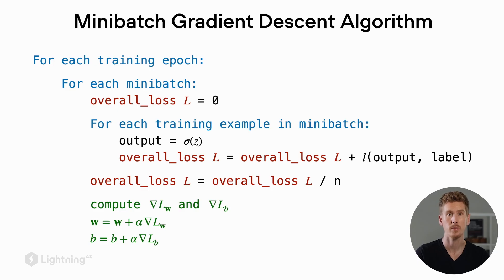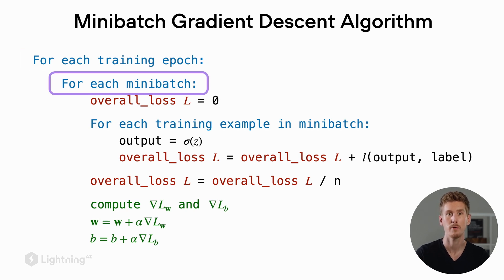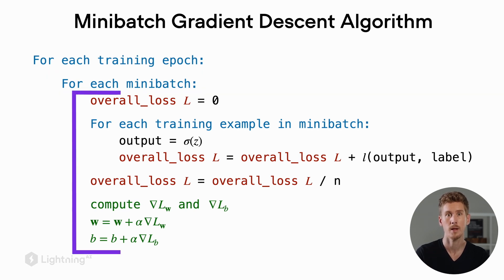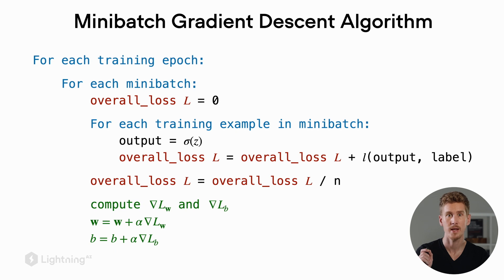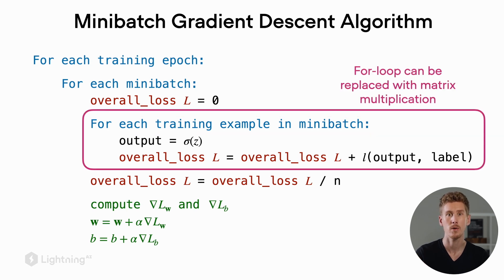Similar to gradient descent and stochastic gradient descent, we iterate over the training epochs. What's new here is that we have a for loop over the mini batches. Everything nested under the mini-batch for loop is essentially identical to gradient descent — we have an overall loss placeholder set to zero, and for each training example we update this overall loss term, computing the loss for all data points in the mini batch.